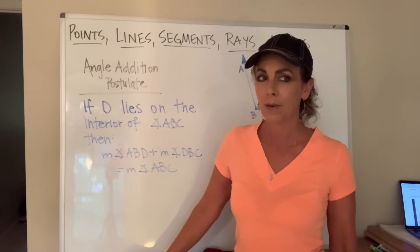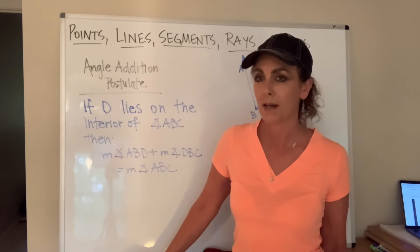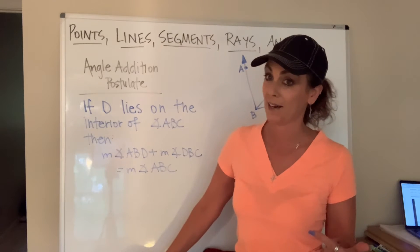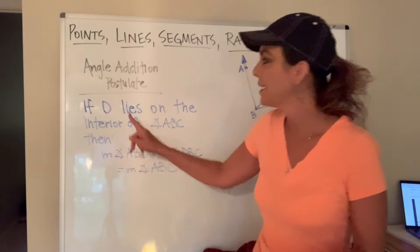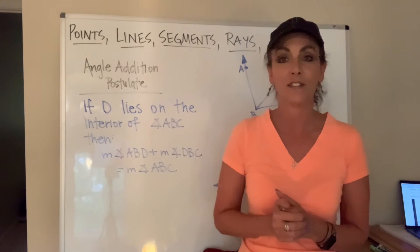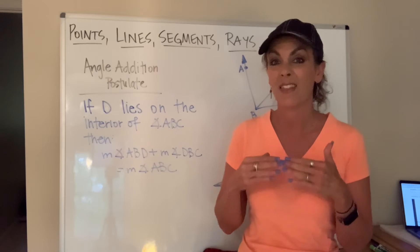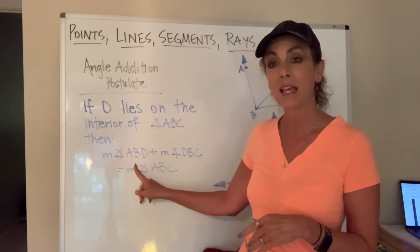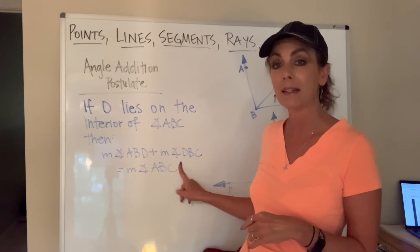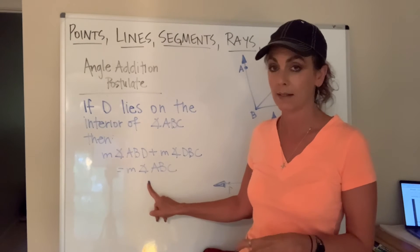I think that you will recognize this, and maybe you didn't even know there was a name for it, but there is, and here it goes. If D lies on the interior of angle ABC, then we can say this: the measure of angle ABD plus the measure of angle DBC will always equal the measure of angle ABC.